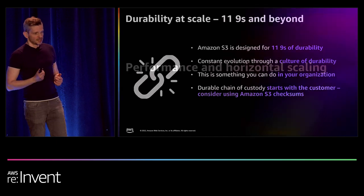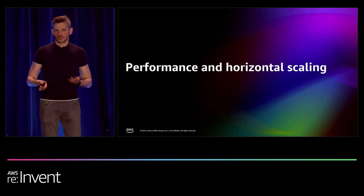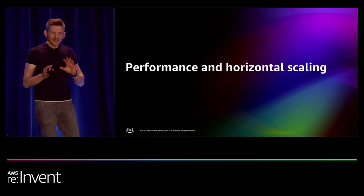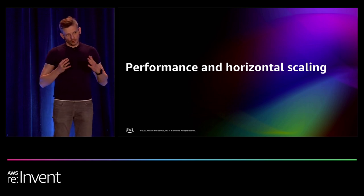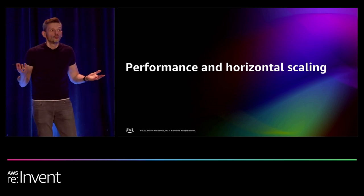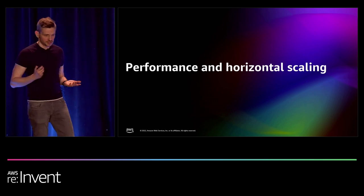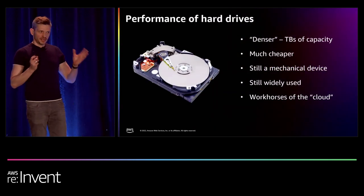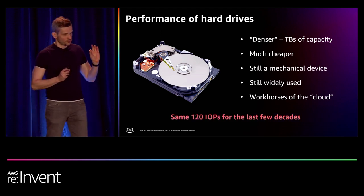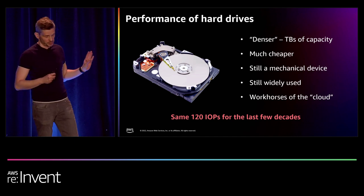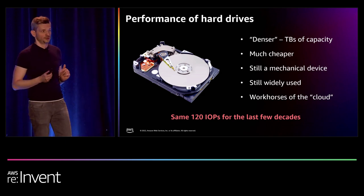Now let's get to performance, availability, and horizontal scaling. We discussed how Amazon S3 durably stores your data, but as you start reading and writing it, you care how fast you can go. That has several dimensions: performance of individual operations — latency or throughput — and the scaling factor of how many parallel connections you can open to the same bucket. Before we examine how Amazon S3 handles these things, let's go back to basics and consider our hypothetical system of hard drives. It turns out that for random reads and writes, you can only expect about 120 IOPS. This number is true today, was true 10 years ago, and was true 20 years ago.